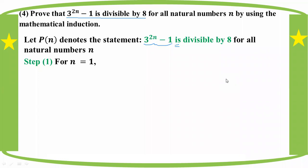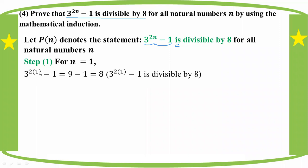3 to the power 2 into 1, minus 1. That is 3^(2×1) - 1.